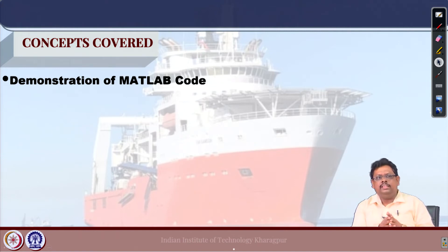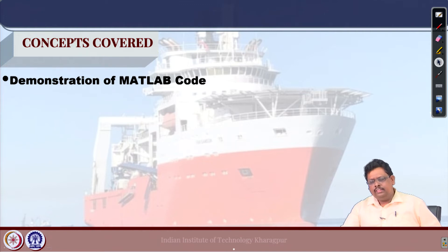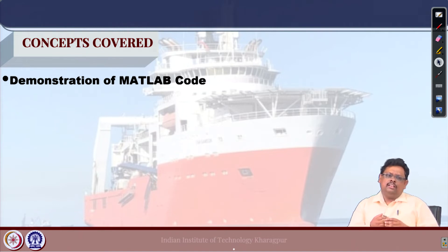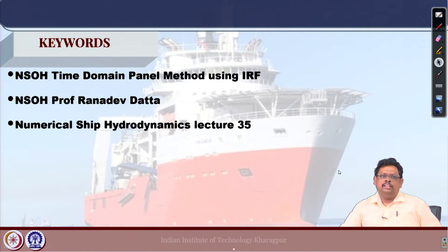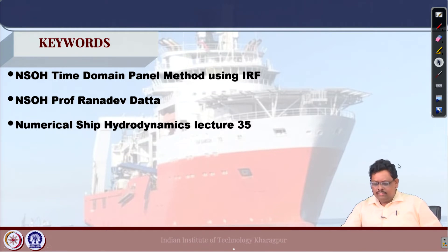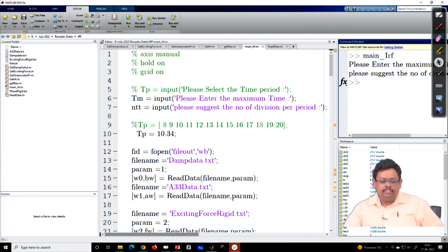The input is a rectangular barge, and we have some frequency domain data for that. I am taking those data as my input parameters, then we run the code and show how the b-tau function should look like and how the response will be obtained. Let us jump into the code now.